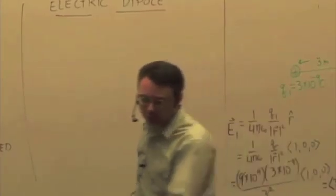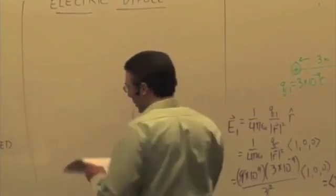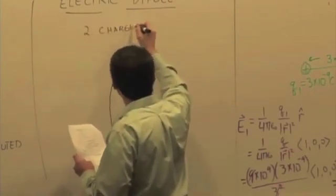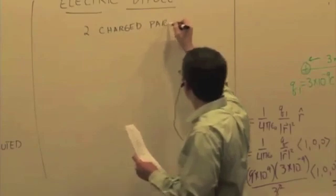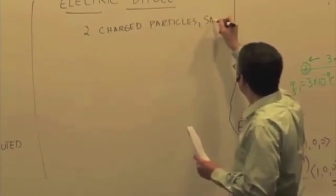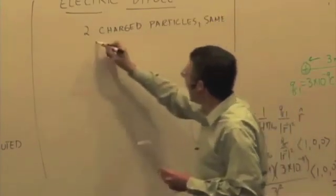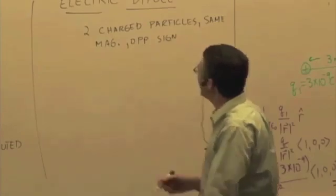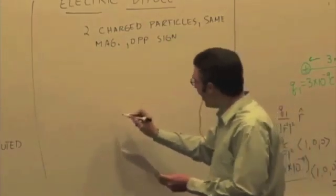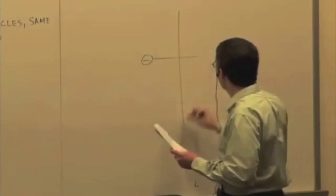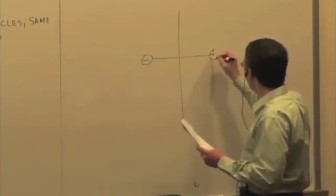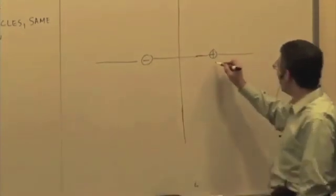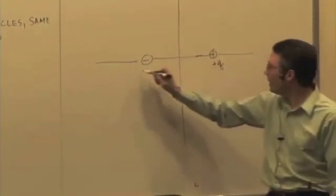So an electric dipole consists of two charged particles, same magnitude, opposite sign. So we have a positive and a negative. There's a negative charge, here's a positive charge, and I'm going to draw them lying on the x-axis. If we call this positive q, then this is going to be minus q.